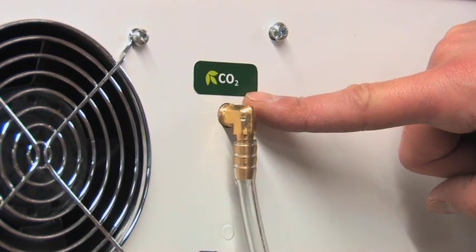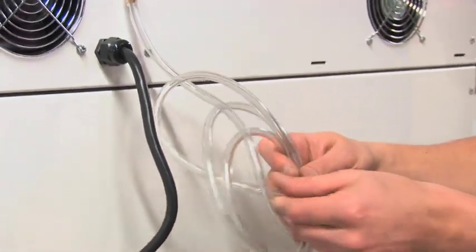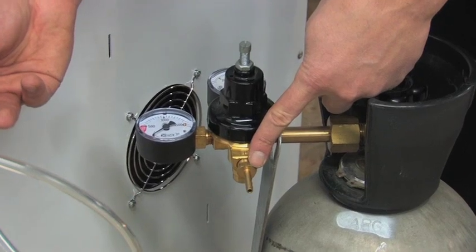On the back of your machine, you will notice your CO2-90 brass with long clear hose coming off of it. Attach your clear hose to your CO2 regulator.